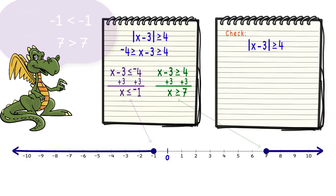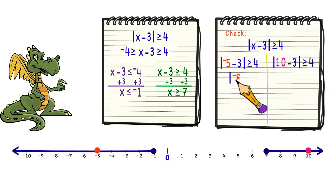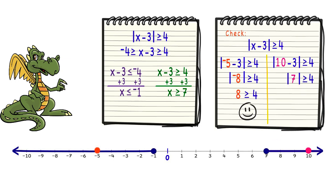Now let's pick some test values to verify our solution. We can try negative 5 and positive 10. Negative 5 minus 3 is negative 8, and the absolute value of negative 8 is 8, and 8 is greater than 4. Then 10 minus 3 is 7, and the absolute value of 7 is 7, and 7 is greater than 4. So that seems to work.